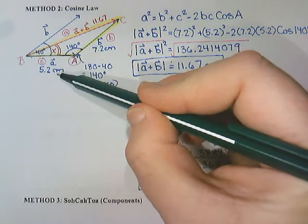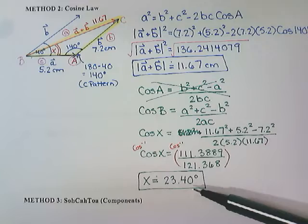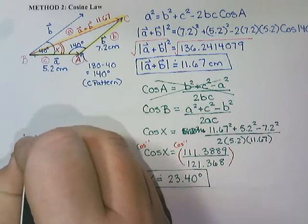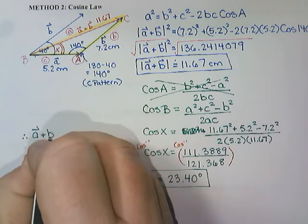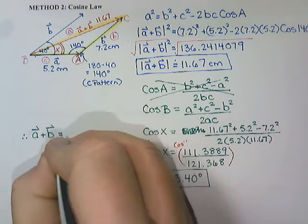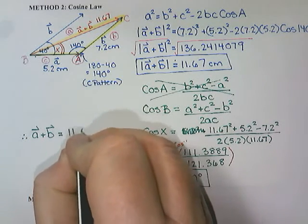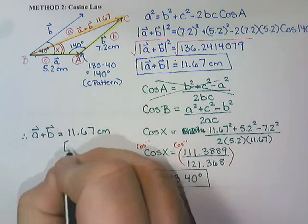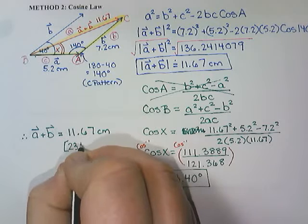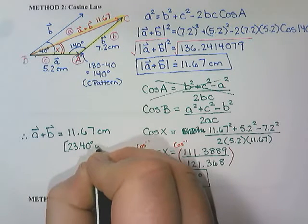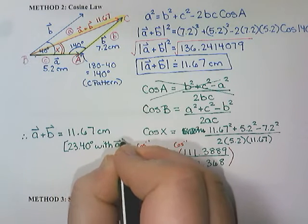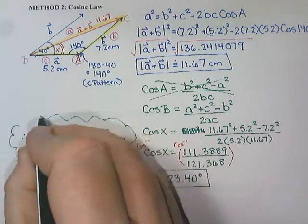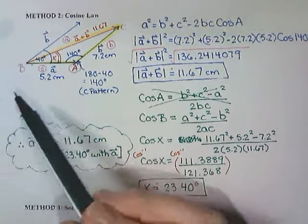So I'm going to finish off by saying that a plus b is 11.67 centimeters, and that the direction is 23.40 degrees with vector a. So we always measure it where it's tail to tail with another vector, so that's why we did vector a. I didn't choose vector b because it's not inside the triangle and it would have been hard to solve for.